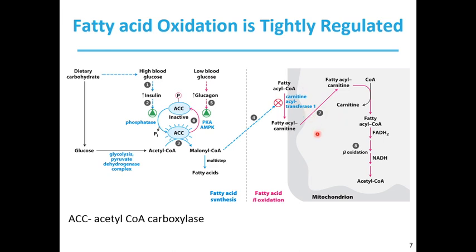When you have a high-carbohydrate meal, it raises blood glucose levels and triggers the release of insulin. Insulin-dependent protein phosphatase dephosphorylates ACC. ACC is usually phosphorylated and inactive. Once insulin activates the phosphatase, it dephosphorylates ACC, resulting in active ACC that converts acetyl-CoA to malonyl-CoA. In addition to being used in fatty acid synthesis, malonyl-CoA also inhibits carnitine acyltransferase-1, preventing fatty acids from entering the mitochondrial matrix.